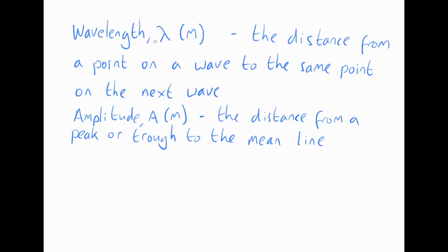Definitions for wavelength: the distance from a point on a wave to the same point on the next wave. Amplitude: the distance from a peak or a trough to the mean line.